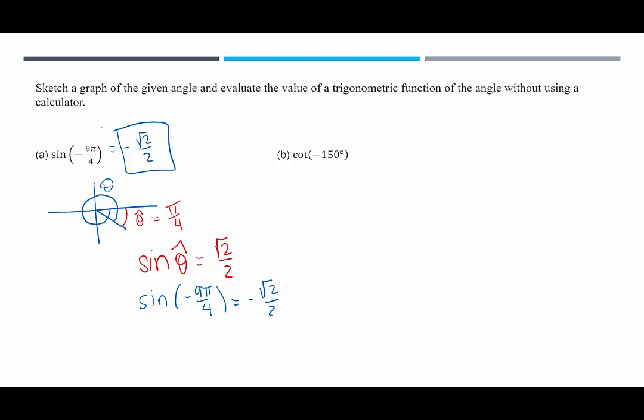Because it's negative, we're moving clockwise. So we're going to go 150 degrees going clockwise. This is 0 degrees. Down here is negative 90 degrees. Over here is negative 180 degrees. Negative 150 will be in between negative 90 and negative 180.